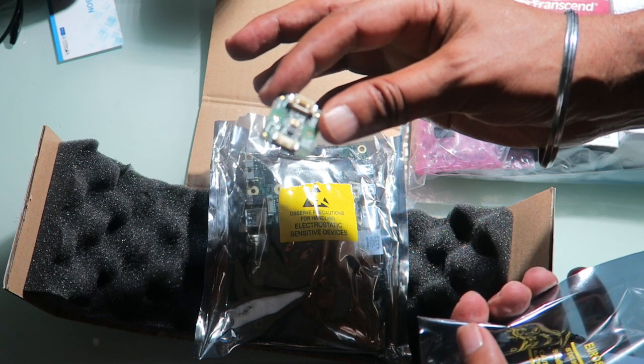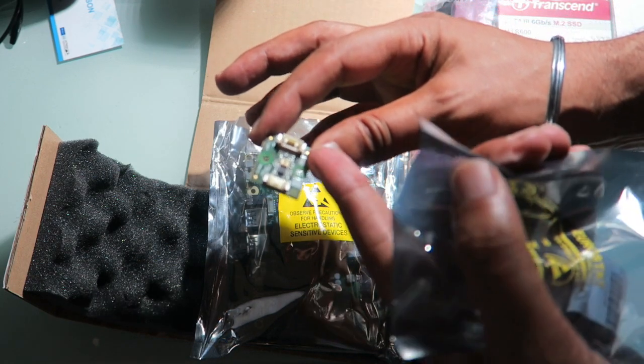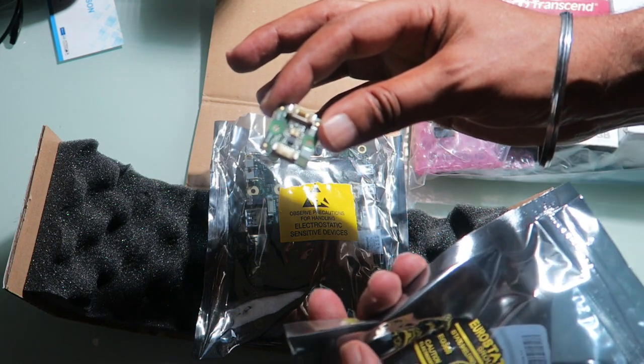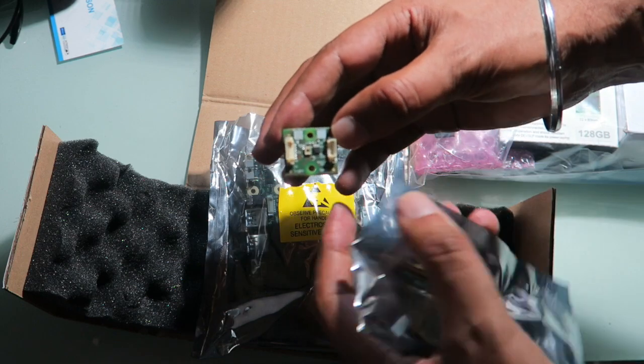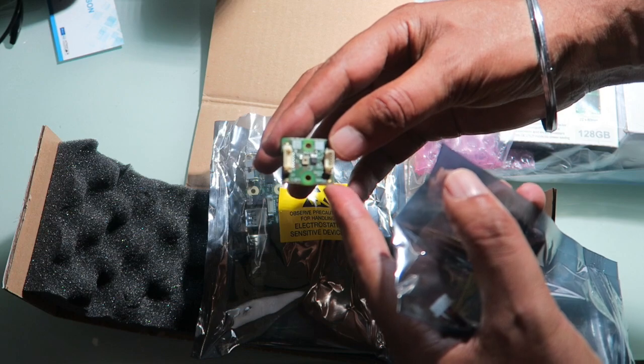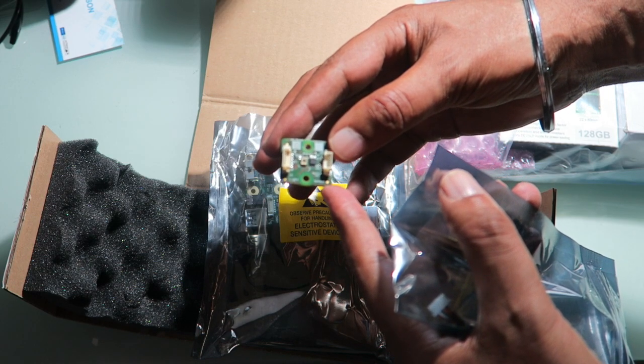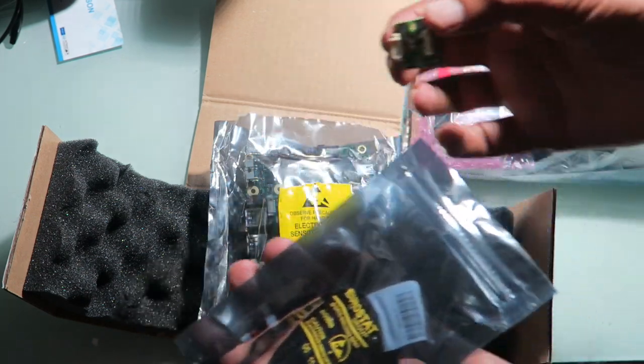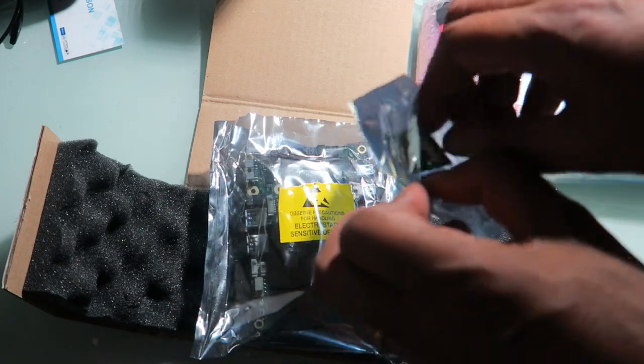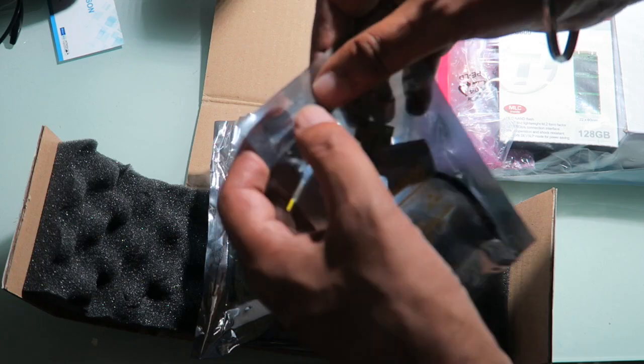It looks like a sensor of some sort. That thing there looks like an optical sensor. It does say sensor on it. Yes, it's a light sensor. This is all part of the kit. We'll be connecting it all up later.